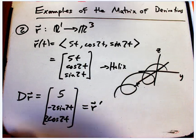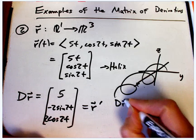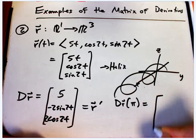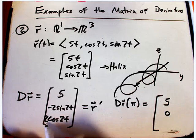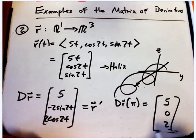But, again, you want to think of this as, let's say, if I took like dr at t equals π, for example, that's going to be 5. Sine of 2π is 0. Cosine of 2π is 1, so it's 2.